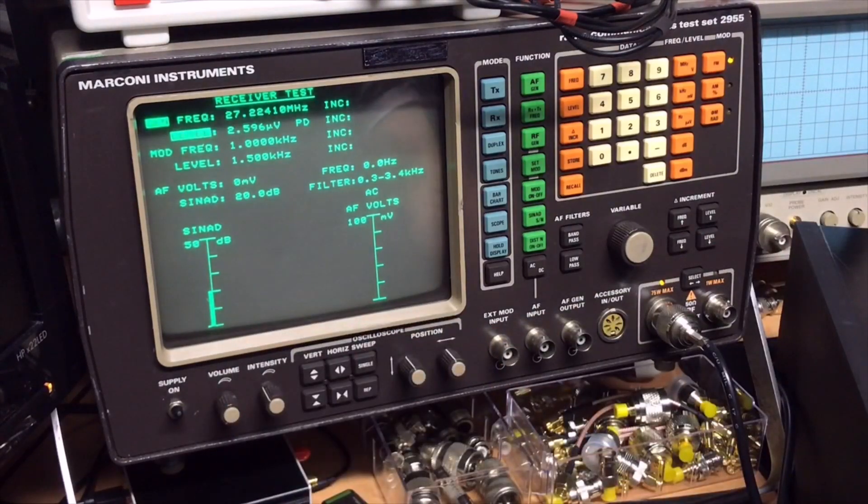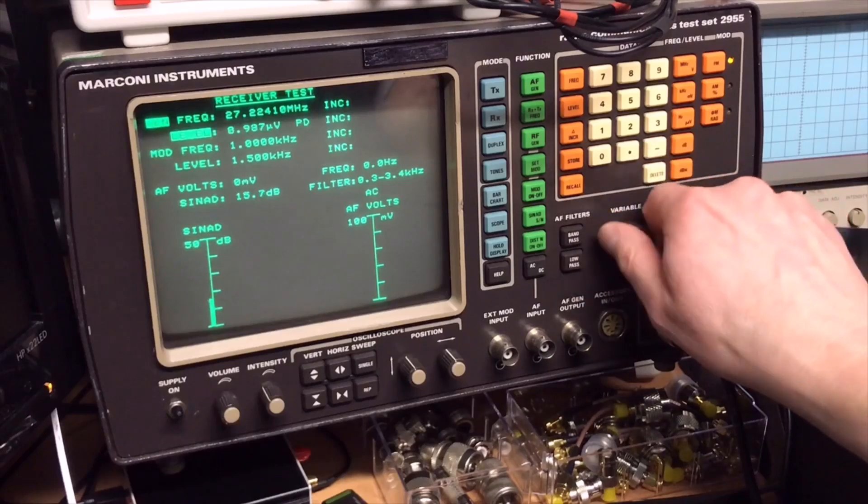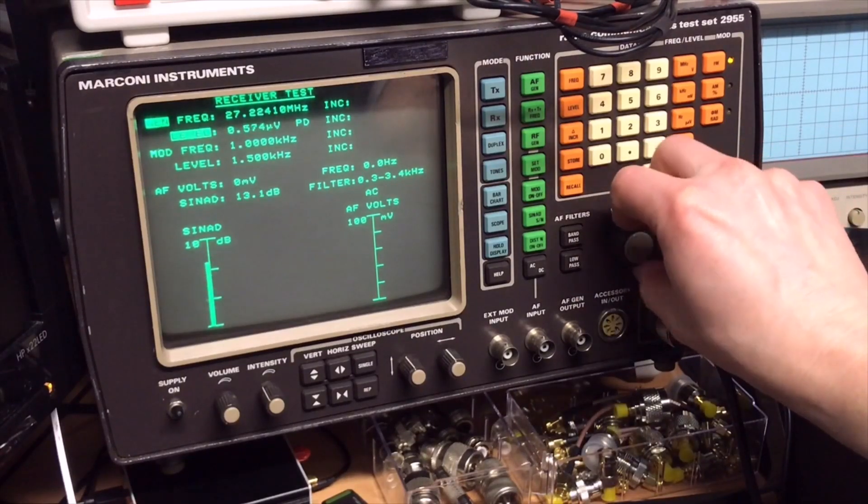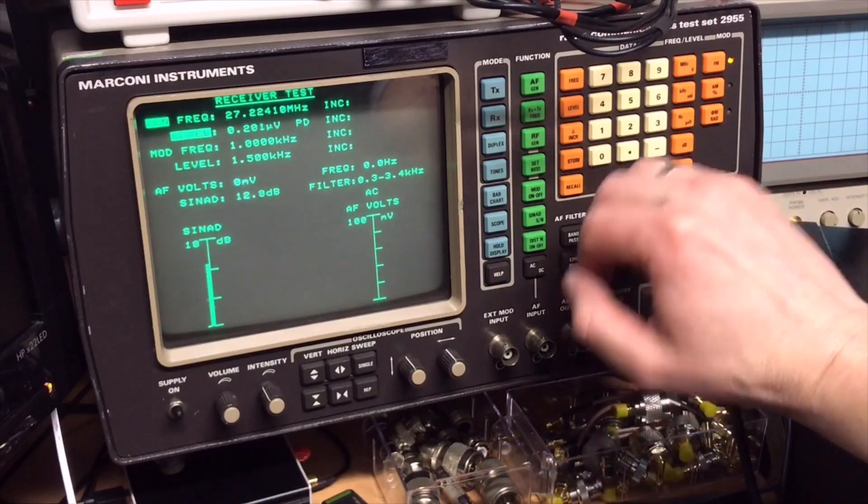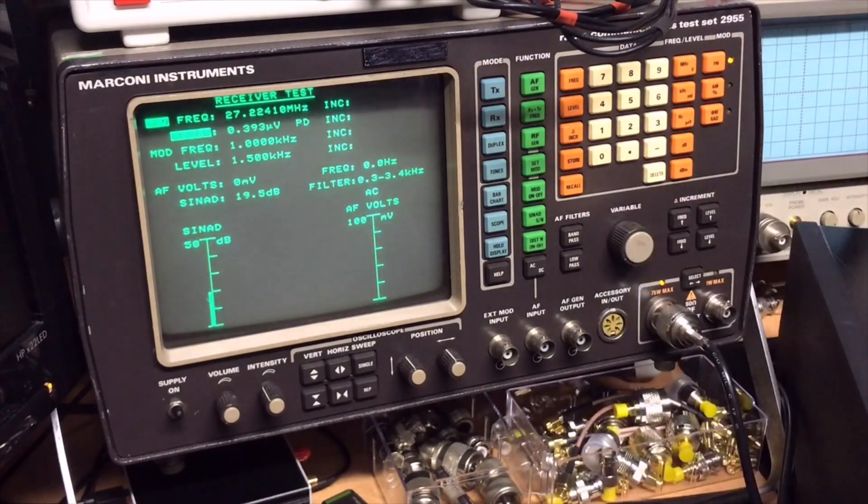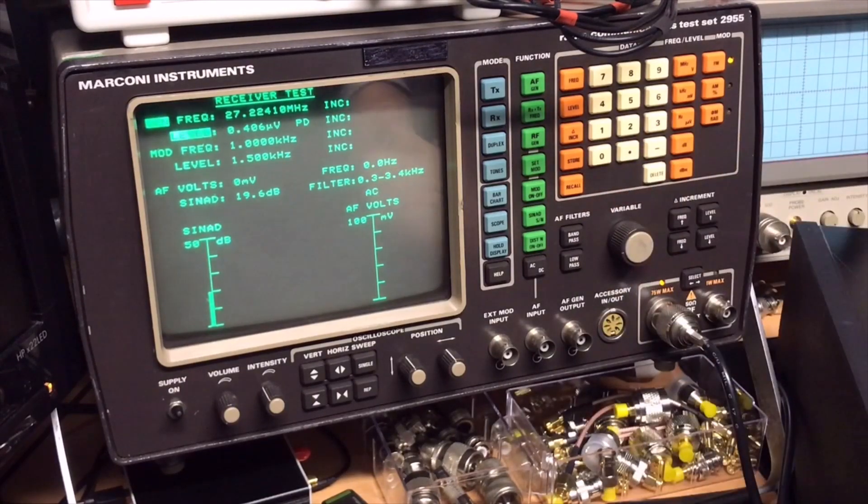So I will put a little bit of noise back and then you can hear what I mean. So if I now turn down, we are now below one microvolt. This is sensitive for an old device from the 80s. 0.3, 0.4 is very very nice. So the radio is working.